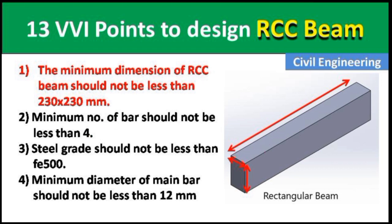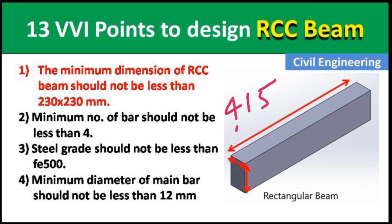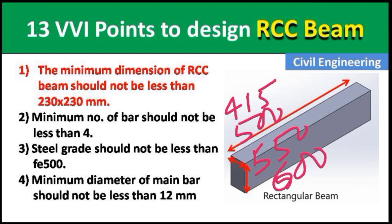Point 3: The steel grade should not be less than Fe 500. There are different grades of steel available in the market — Fe 450, Fe 500, Fe 550, Fe 600, etc. — but if we are using steel in a beam, it should not be less than Fe 500 grade.